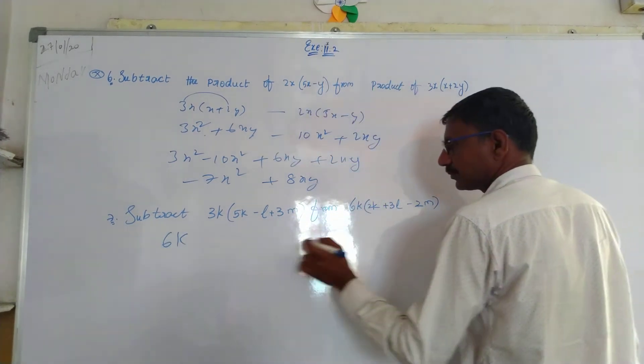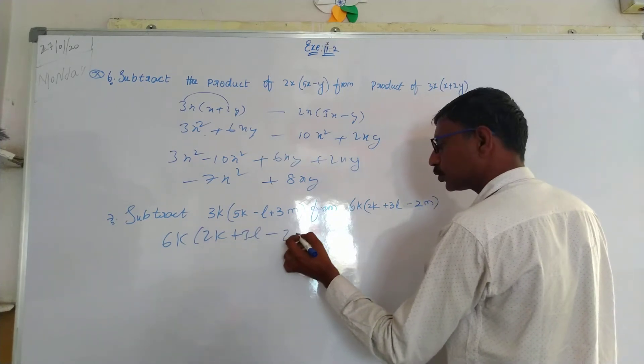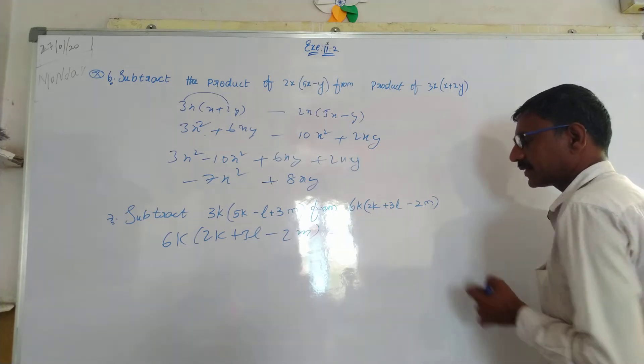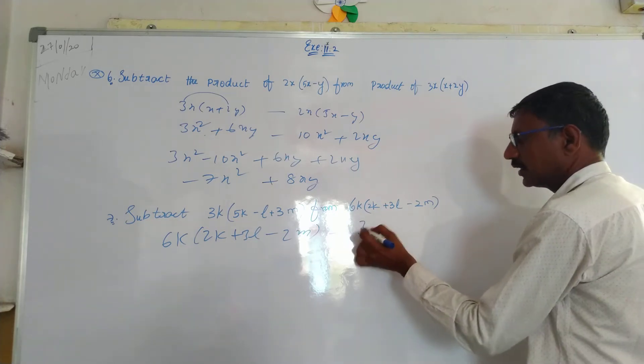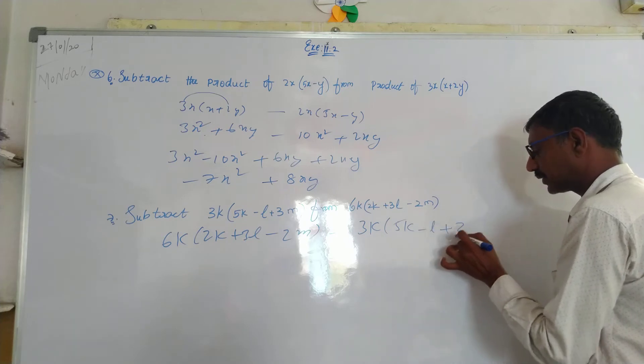6K into 2K plus 3L minus 2M, that is the second part. Minus 3K into 5K minus L plus 3M.